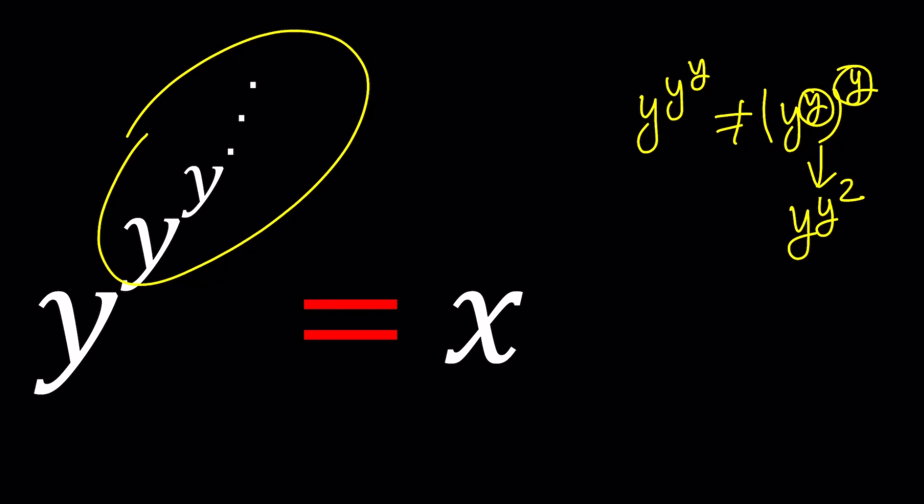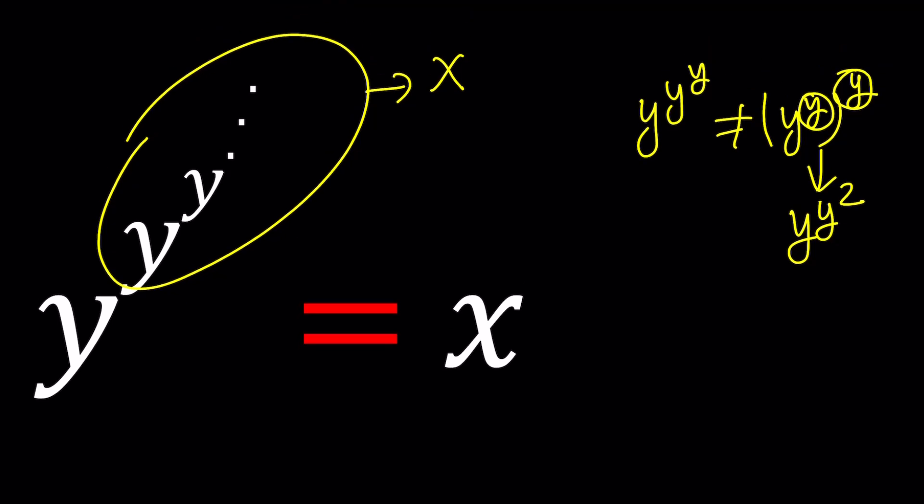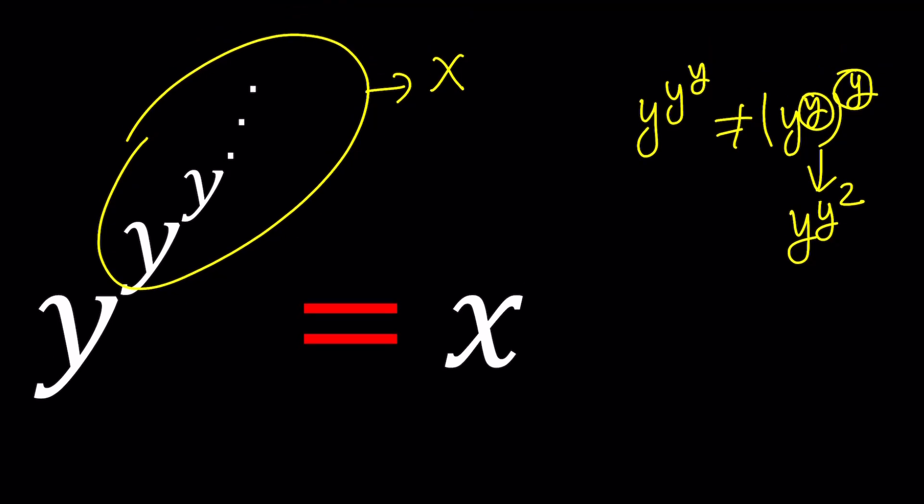Since the whole thing is contained in the exponent, if the whole thing converges to x, then this expression will also converge to x. Then we get another equation, which we'll look at from different angles.